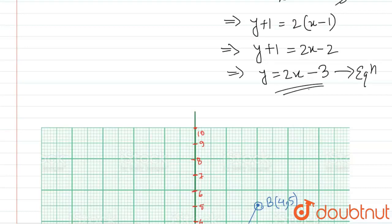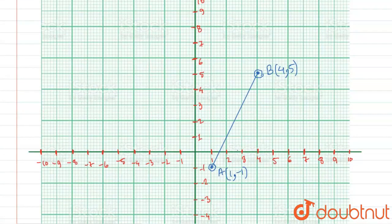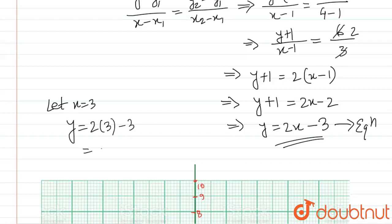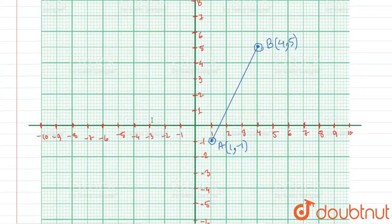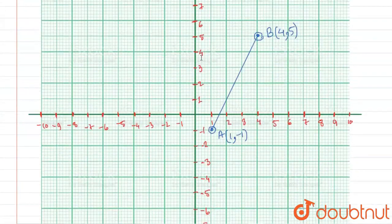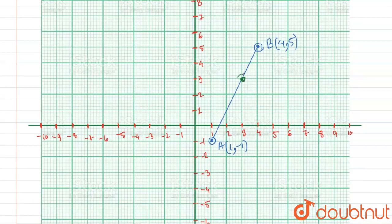We'll use this equation to find a point between A and B on the line segment. Let's consider a point whose x-coordinate is 3. If x = 3, then y = 2(3) - 3 = 6 - 3 = 3. So we get the point (3, 3), which lies on the line joining A and B between the two points.